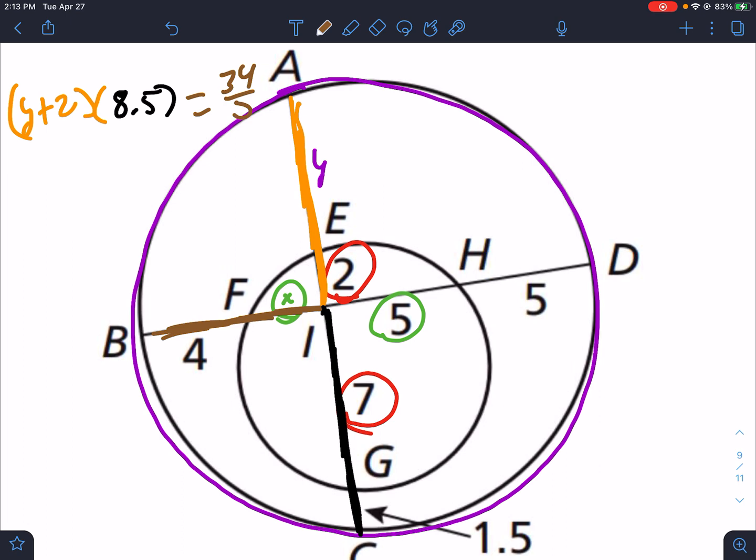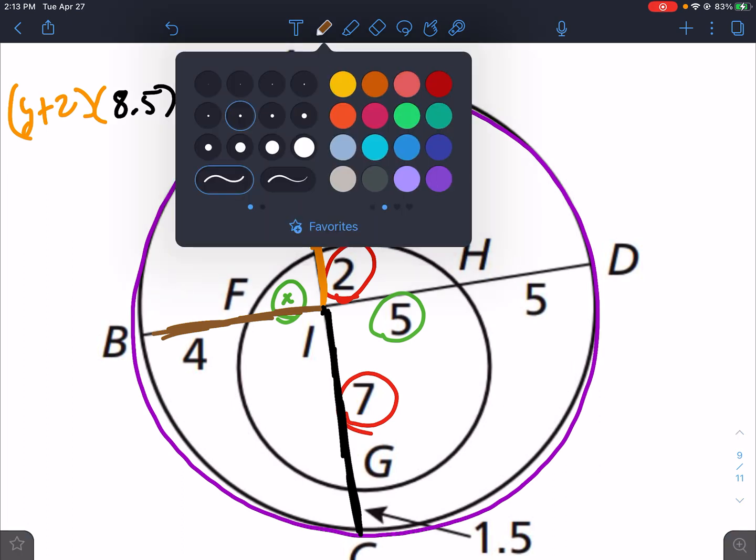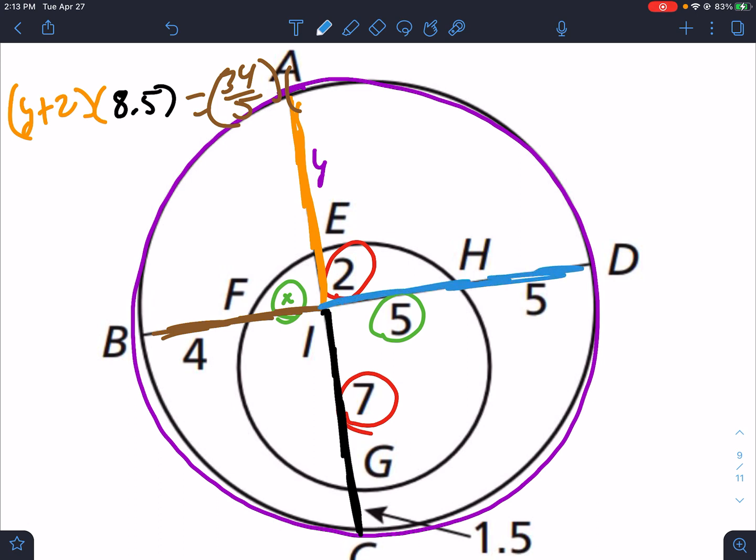So over here we have 8.5y plus 16, that's part times part, times 10 would be 68. So 8.5y minus 16 would be 52. 52 divided by 8.5, and I get y equals 104 over 17. That doesn't feel right. Let me look here real quick. That's y plus 2. That's that part times 8.5. 8.5 times 2 is 17. 8.5 times 2 is 17. So let's try this again.